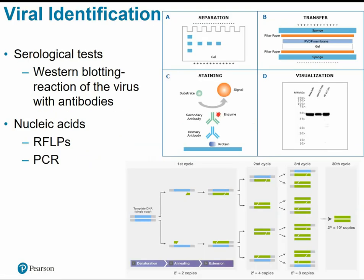Serological tests are most commonly used to identify viruses. Western blotting tests the reaction of a virus with certain antibodies. The process involves separation by gel electrophoresis: restriction enzymes cut the DNA into fragments, which are placed in a gel and subjected to an electrical charge. Smaller fragments move further toward the bottom; larger fragments remain closer to the top. The gel is then transferred to a membrane and stained with antibody serum. If the virus is present and expresses the target surface proteins, antibodies will bind and give a signal, allowing identification and diagnosis.